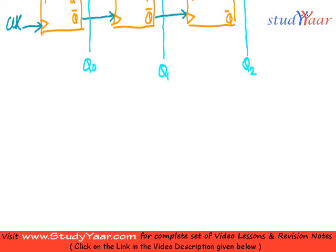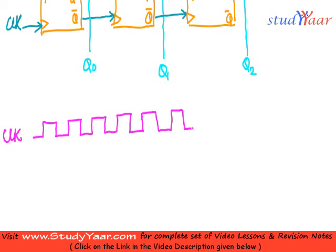So first of all, I am going to draw the clock. So here is my clock. I am going to take a look at at least 8 cycles. 3, 4, 5, 6. This is 7 and 8. And probably one more.